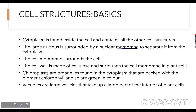In the process of photosynthesis, the chloroplast contains the pigment chlorophyll. Chlorophyll absorbs energy from sunlight, and that energy is used to make food for the plant. Chloroplasts are organelles found in the cytoplasm that are packed with the pigment chlorophyll and are green in color — this is why plants are green. Vacuoles are large vesicles that take up a large part of the interior of plant cells and are used for storage of food and nutritional materials that help plant growth.